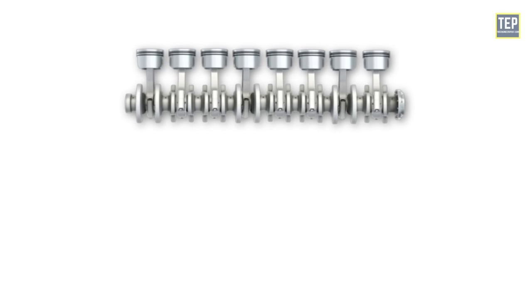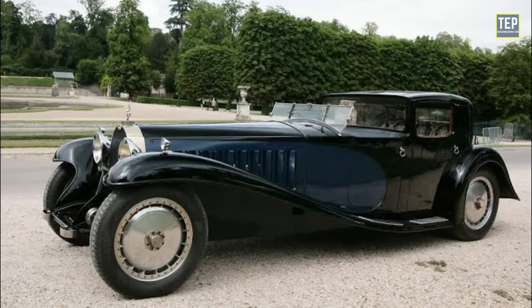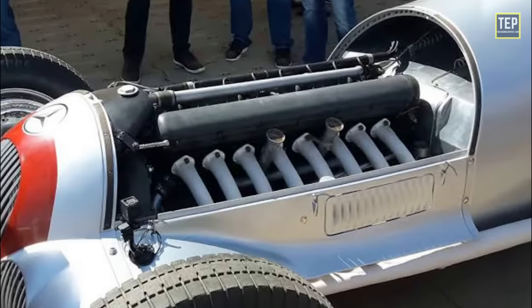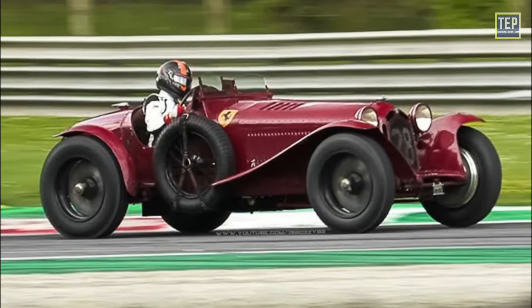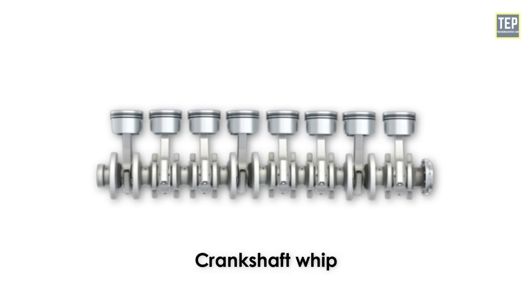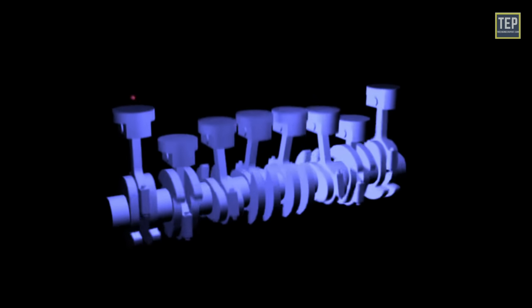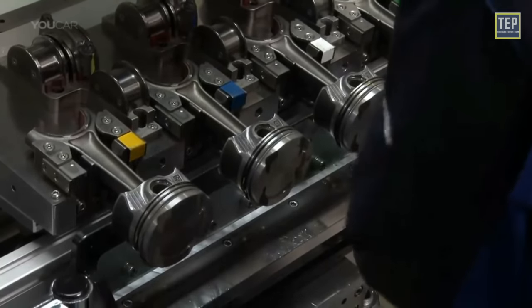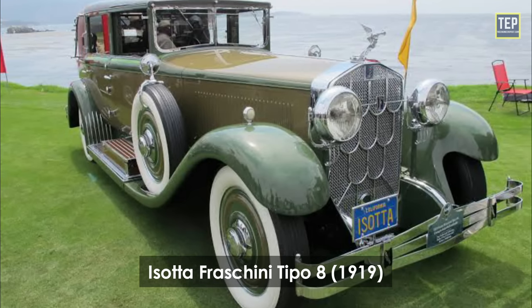Early straight eights ran more smoothly than their V8 counterparts, making them the preferred choice for luxury vehicles of the time. As technology improved and demand for very long vehicles waned, the straight eight started to lose favor. As cars became smaller and engine bays tighter, the straight eight couldn't fit in any reasonably sized vehicle. The biggest flaw that ultimately killed the straight eight was crankshaft whip — due to the extreme length of the crankshaft, at high engine RPM, torsional vibration could lead to physical contact between the connecting rods and crankcase walls, ultimately destroying the engine. Italy's Isotta Fraschini introduced the first production automobile straight eight in their Tipo 8 at the Paris Salon in 1919.